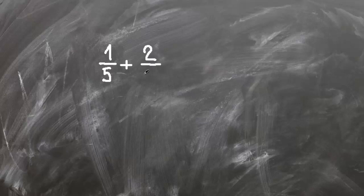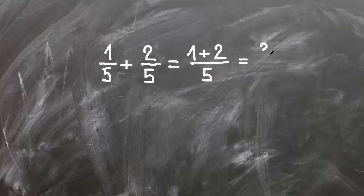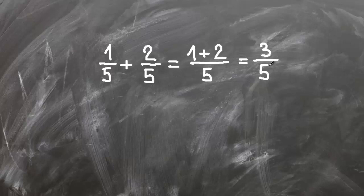First example is very simple. One fifth plus two fifths. You get one plus two over five and this is three fifths.